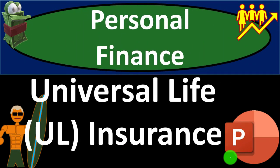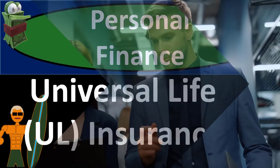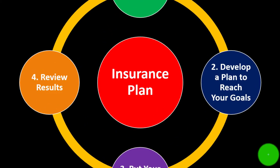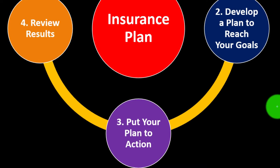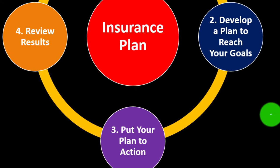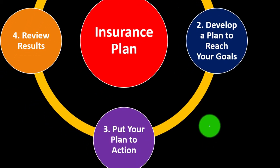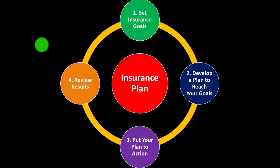Personal Finance PowerPoint Presentation: Universal Life (UL) Insurance. Prepare to get financially fit by practicing personal finance. Insurance is part of our long-term risk mitigation strategy where we follow the adage of measure twice, cut once — put a formal process in place: set the goals, develop a plan to reach them, put the plan in action, review the results, and repeat the process periodically.